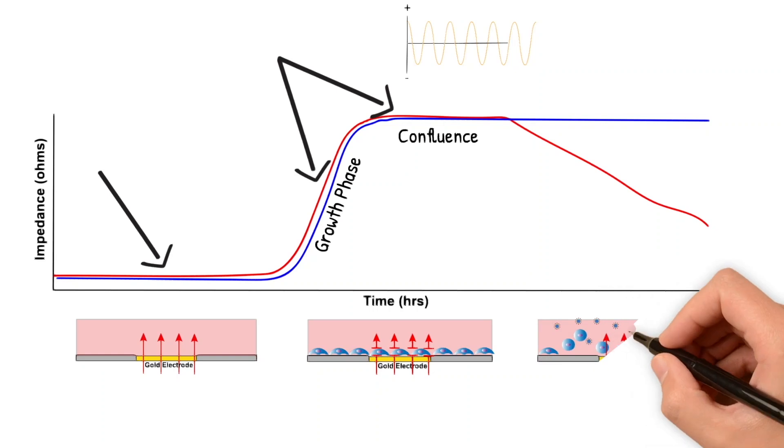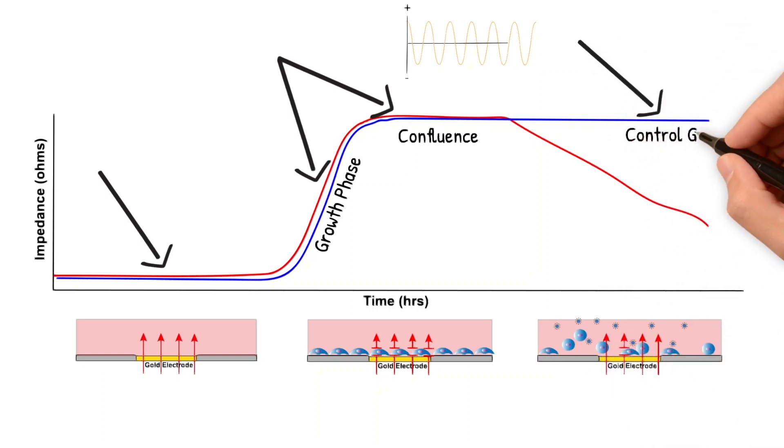Then, of course, if a treatment is added that is cytotoxic, the cells will either loosen their barriers or ball up and lift up off the electrode, causing a decrease in impedance that is linear with the percentage of cell coverage.